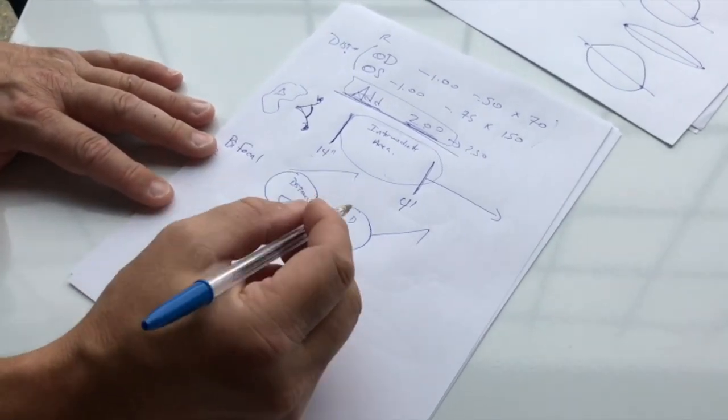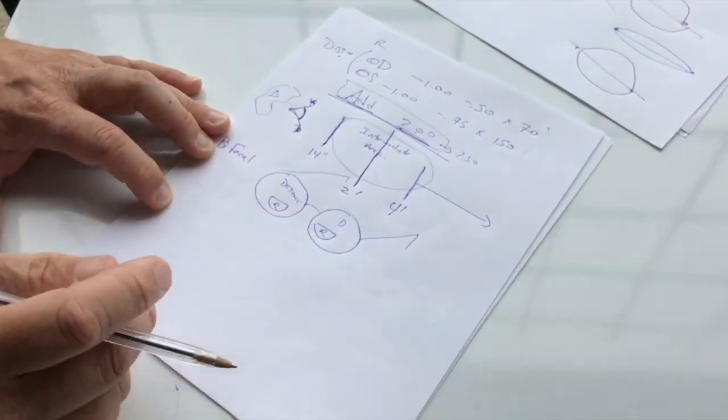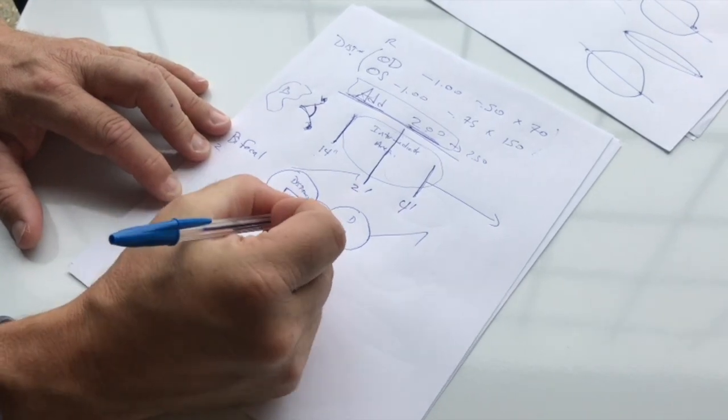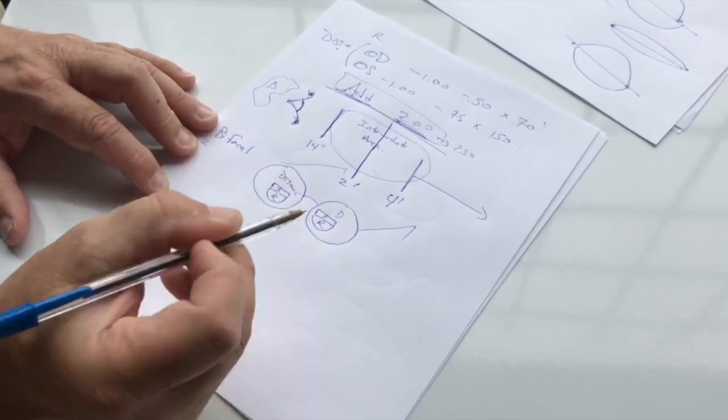So, then what we would do is we would do a trifocal. And a trifocal, we would put a focal point right at two feet. And on the lens, it looks like a third window like that, where we would put the intermediate prescription.